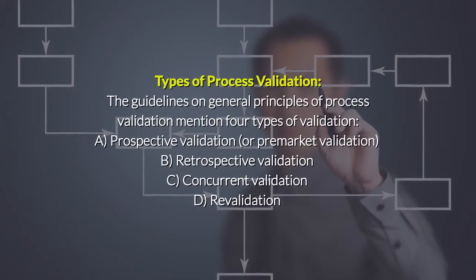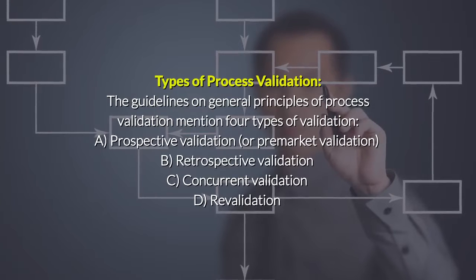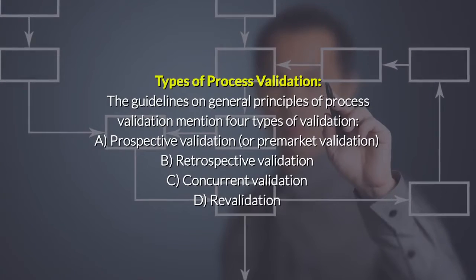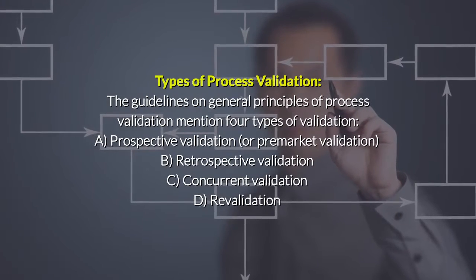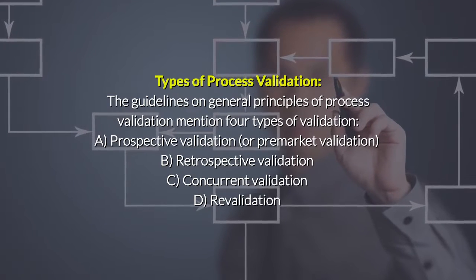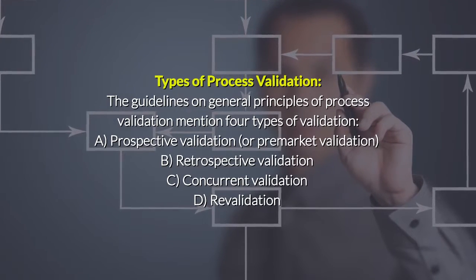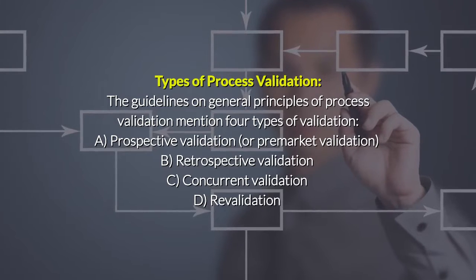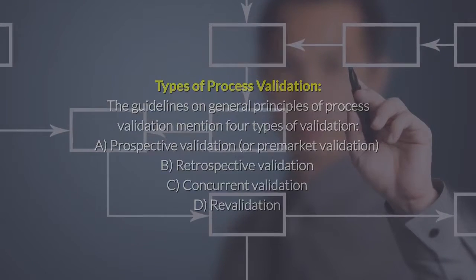The guidelines on general principles of process validation mention four types of validation: A) Prospective validation, also called pre-market validation; B) Retrospective validation; C) Concurrent validation; and D) Revalidation.